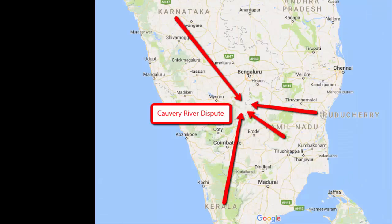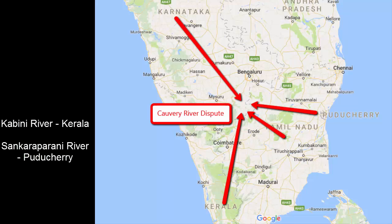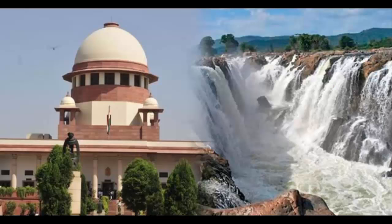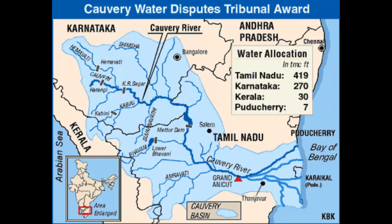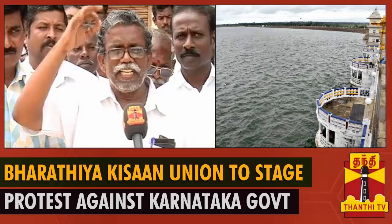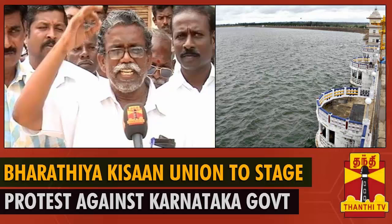There are a few tributaries of river Kaveri that flow through these regions. In 2007, the Kaveri Water Tribunal set up by the Supreme Court came to a verdict, allocating Kaveri water annually to all four states in a certain ratio. The dispute still continues, as all four states are filing review petitions seeking clarification and renegotiation of the 2007 order. This is the history behind the Kaveri river dispute.